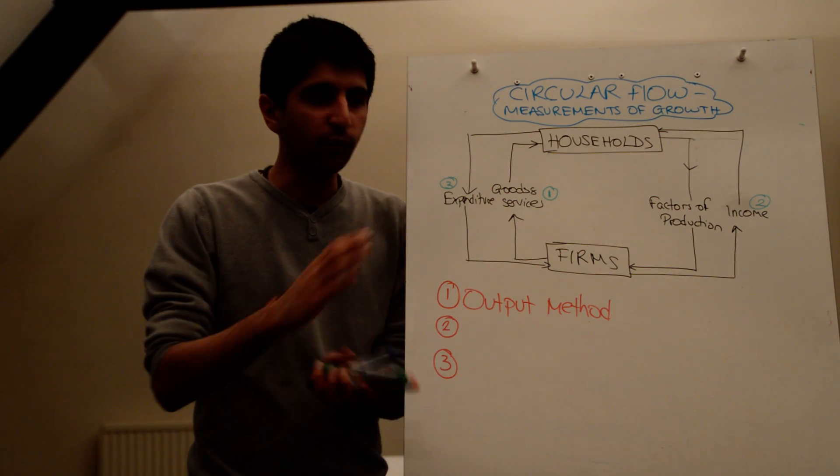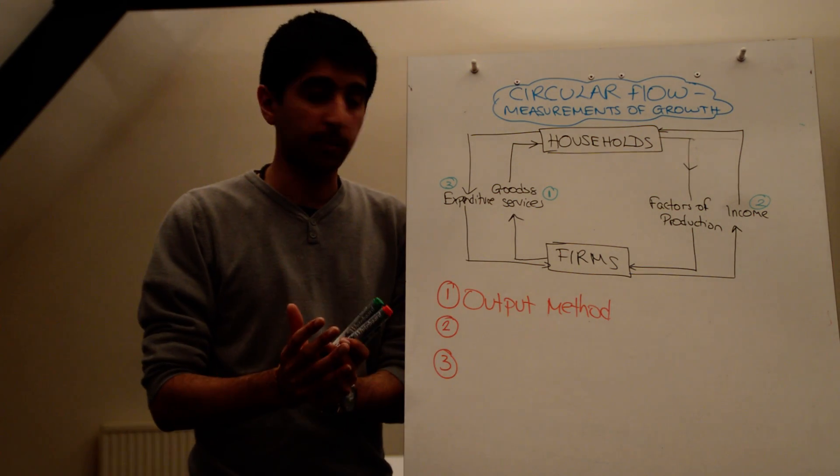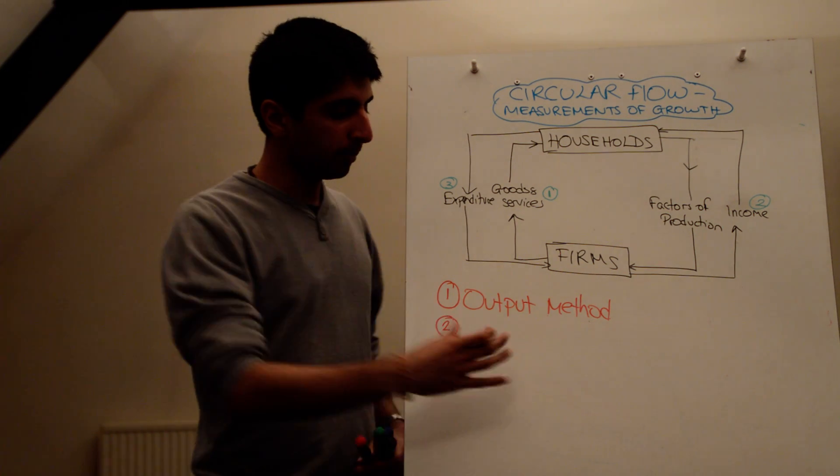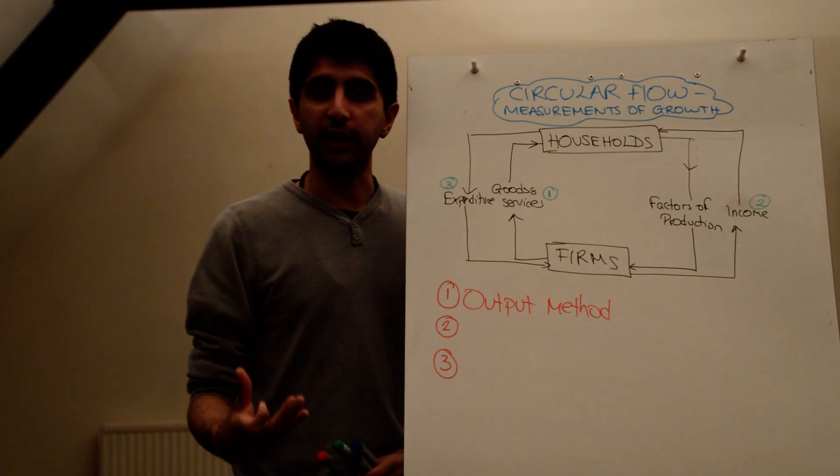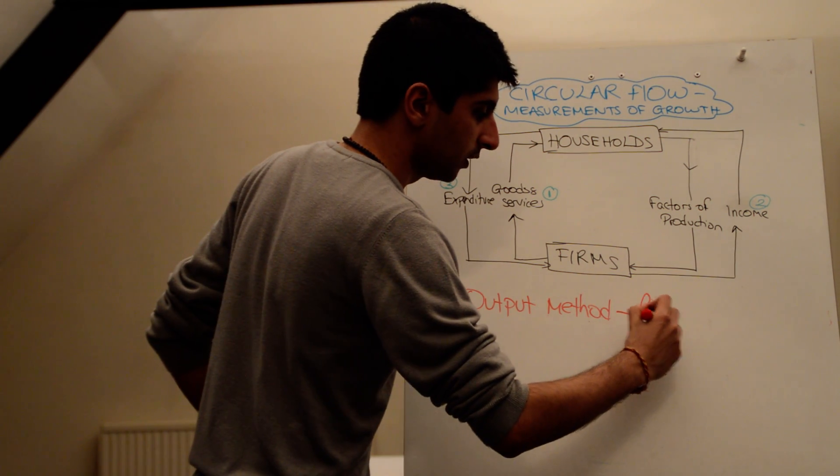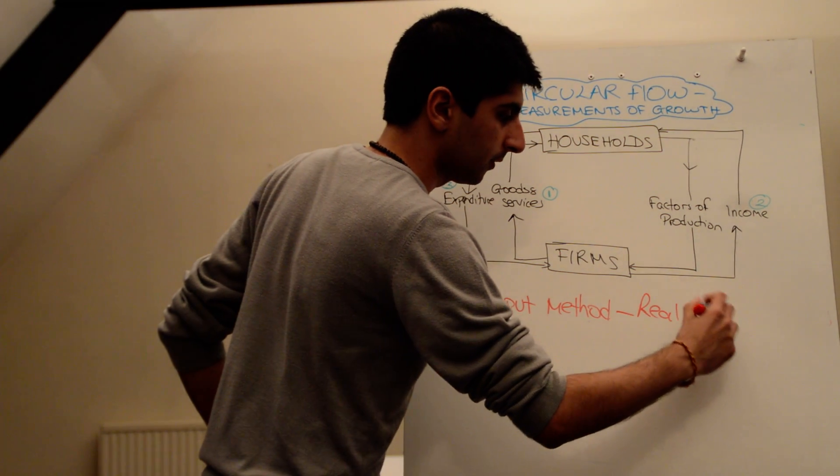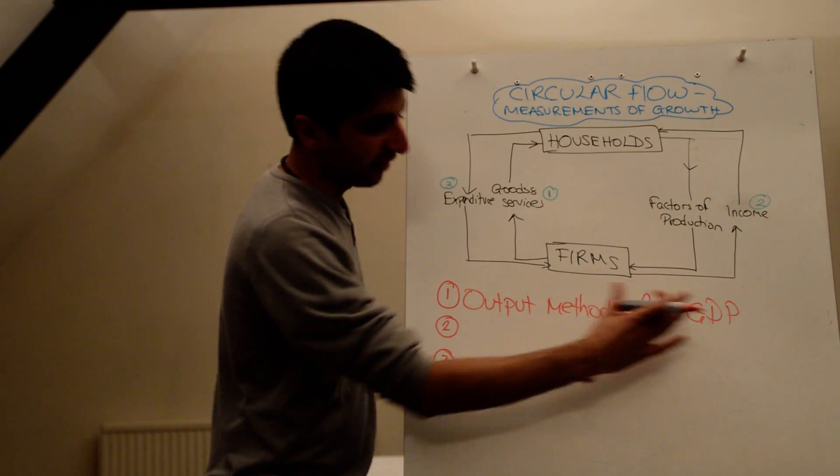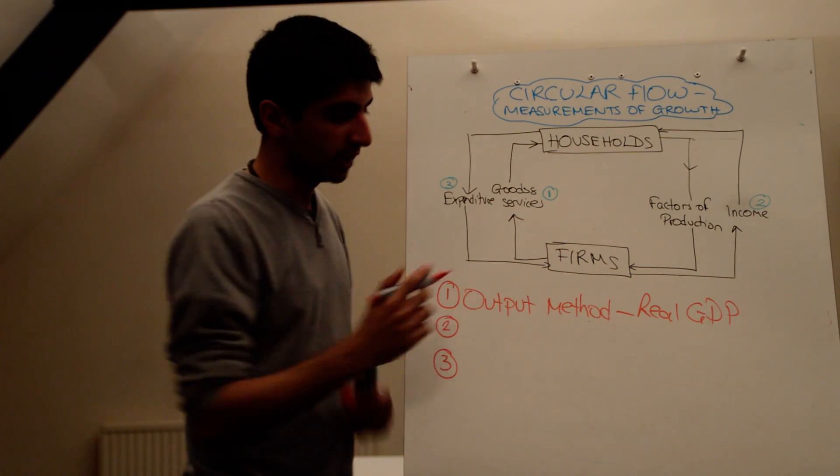GDP, basically. The value of all the goods and services produced in the economy. You add them all up and you get an idea of output in the economy. So this, basically, is real GDP as we come to know it. Something you must be quite familiar with. That's the output method, real GDP.